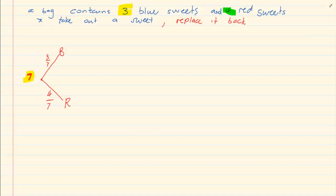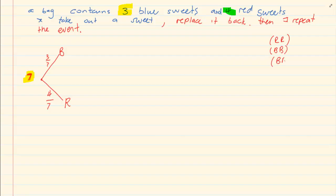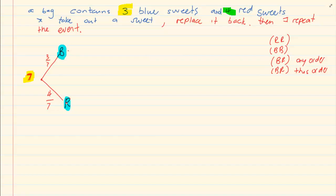The bag contains three blue sweets and four red sweets, and I take out a sweet and replace it, then repeat the event. I want to know the probability of taking out a red and red, or a blue and blue, or a blue and a red in any order. After the first event, we put back all the sweets and start again. Again we have three over seven for blue and four over seven for red.